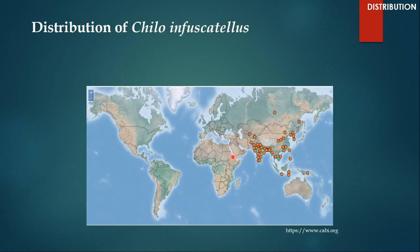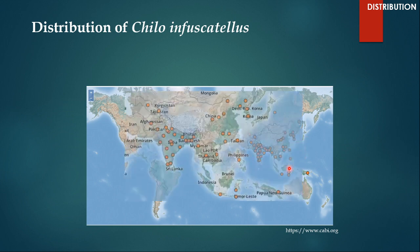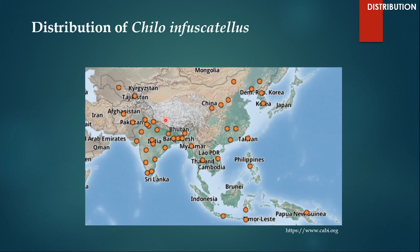Let us talk about the distribution of Chilo infuscatellus. You can see that it is abundantly found in Southeast Asia. If we magnify the map, you can see that in India, Chilo is very widely distributed — it is found almost everywhere. It is also found in Pakistan, Afghanistan, China, Korea, Bangladesh, Myanmar, Philippines, Thailand, Indonesia, etc. Even in the Australian continent, in Papua New Guinea, Chilo infuscatellus has been reported.